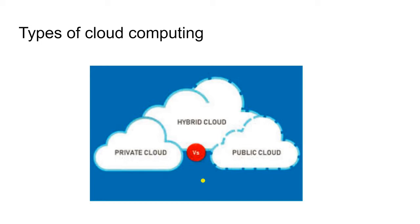Some things are handled privately, some are put on the cloud. A mechanism exists to allow them to network together, if needed. So, that is the hybrid deployment model. We'll cover the details further.